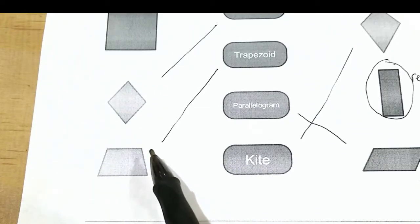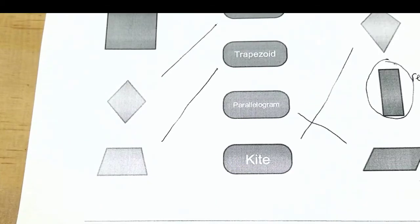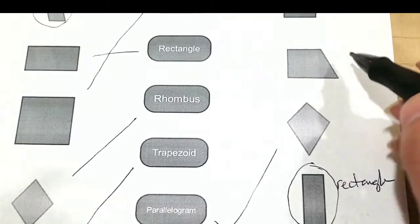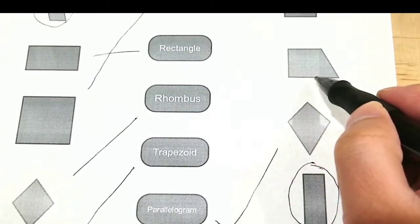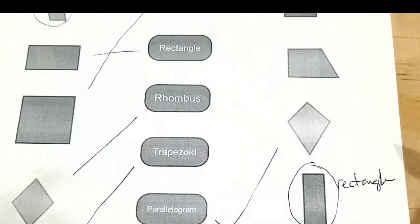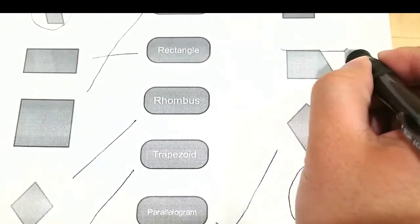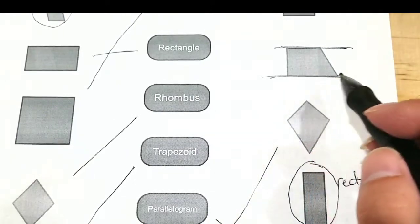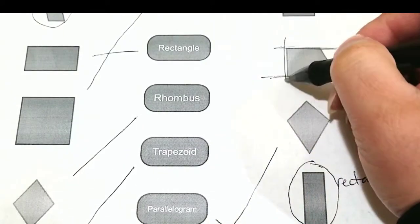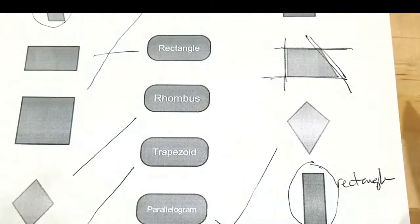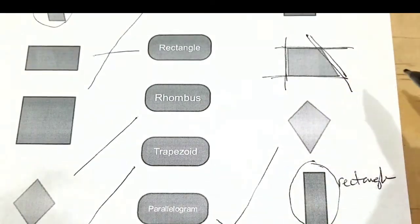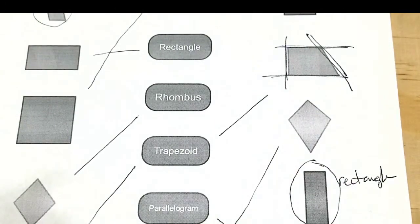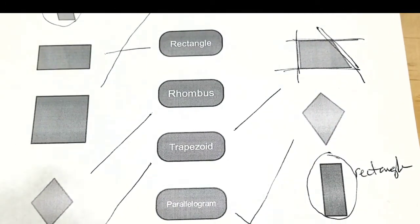Another example of a trapezoid is here. We have the bottom length and the top, they're parallel to each other, they're going in the same direction, but then the sides are not parallel, they're in different directions. So we see how one's right there and one's that way, so it's a different direction, it's not the same direction. So that's another trapezoid.